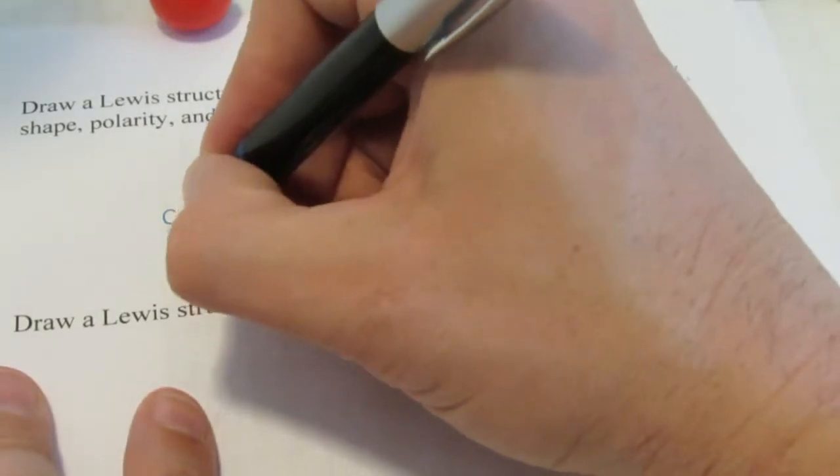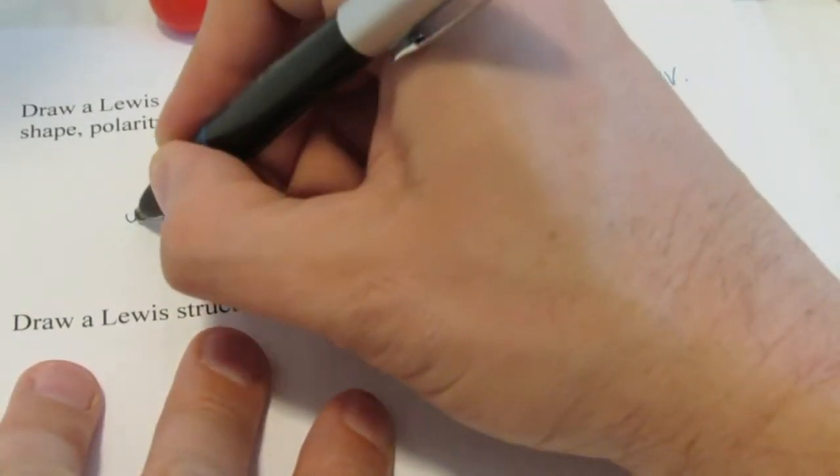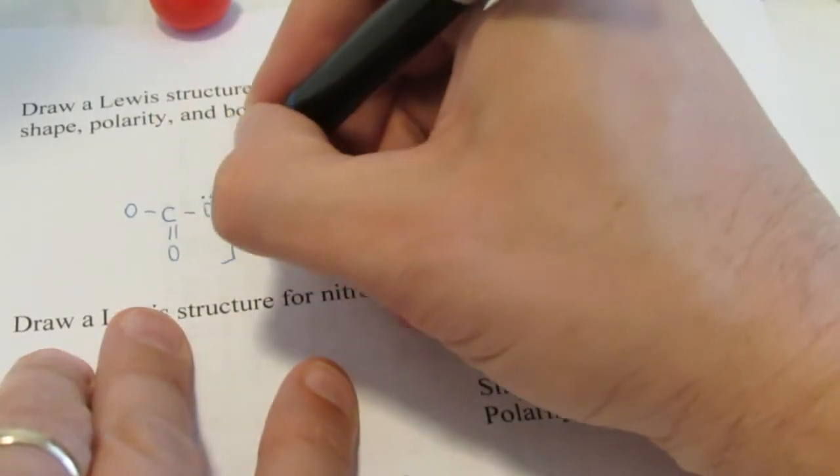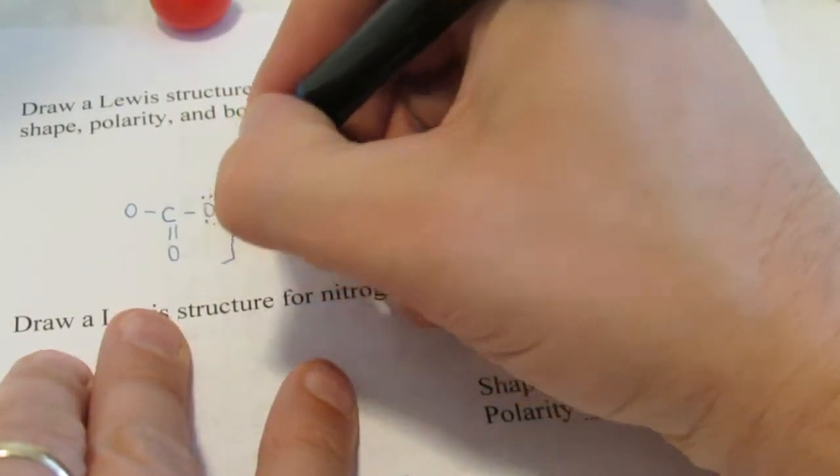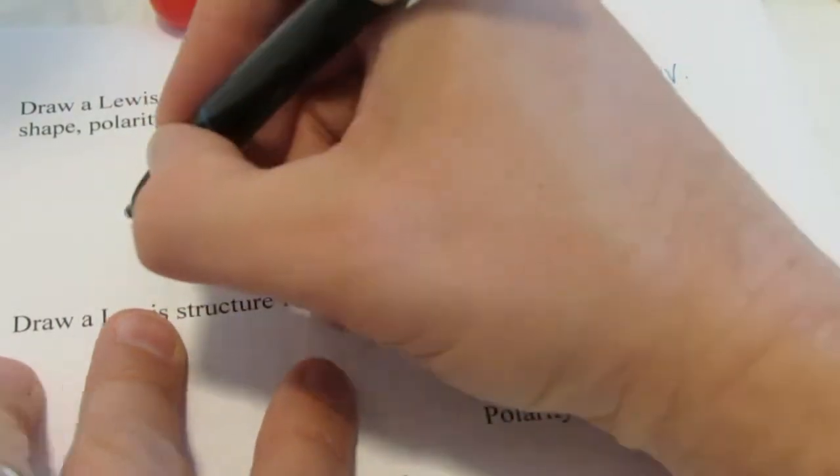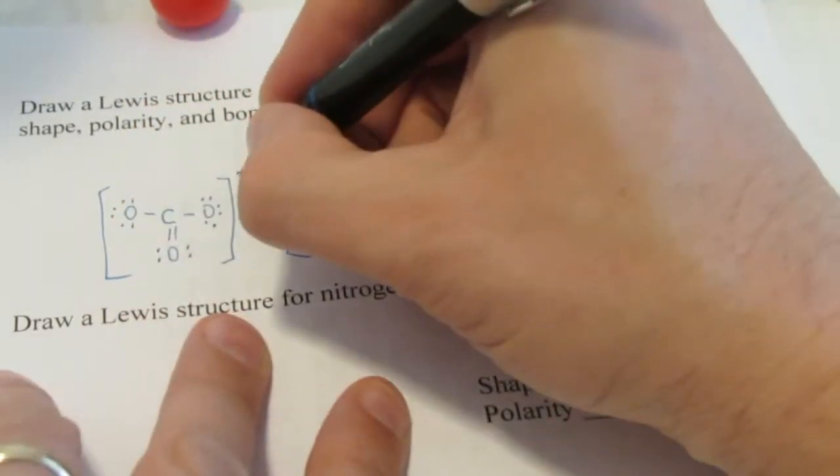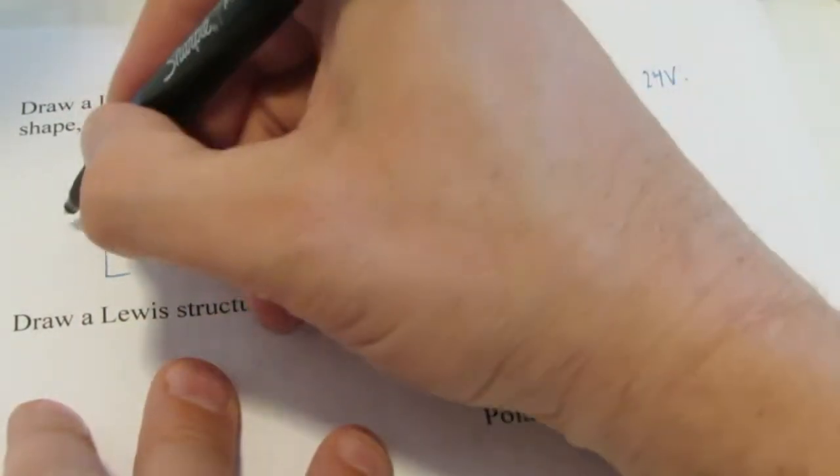So I'm going to draw a double bond to the oxygen below now. And we'll single bond these other two. And we'll complete the octets of the oxygens, just like we did before. And that one right there.